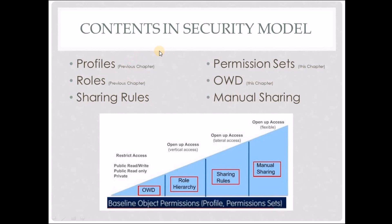In our previous video, we have already gone through some of the components of the Salesforce security model — that is the profiles, the roles, and we've also created a user. In this video, we are going to work with permission sets, organization-wide defaults, and field level security. As we discussed in our previous lesson, profiles and permission sets together make the baseline object permissions, which determines what a user can see in the Salesforce org. On top of this, we have additional settings like the OWD, the role hierarchy, sharing rules, and manual sharing. The OWD sets the default settings for record access, while role hierarchy, sharing rules, and manual sharing open up the access.